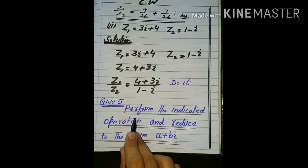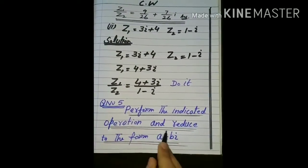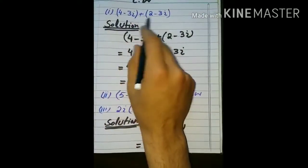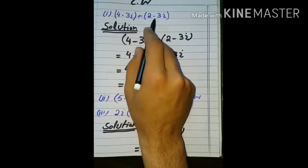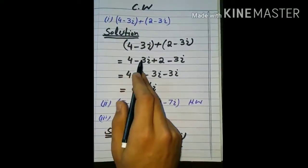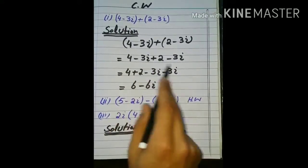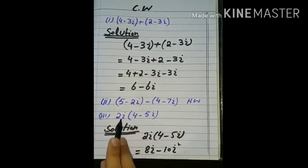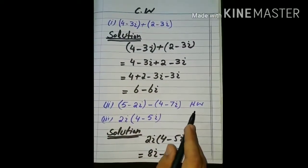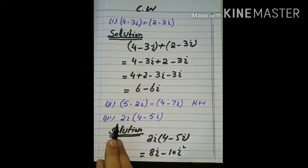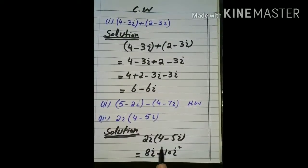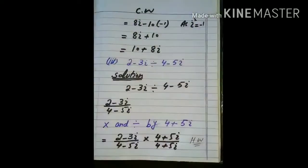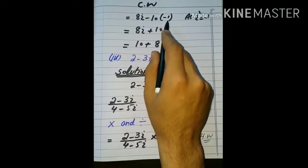Next ہمارے پاس last question: perform the indicated operation and reduce to the form of a plus b iota۔ یہ question دیا ہے — ان دونوں complex numbers کو add کرنا ہے۔ اسی طرح real part کو real کے ساتھ اور imaginary کو imaginary کے ساتھ add کرنا ہے۔ arrange کیا تو 6 iota اور minus 6 iota آجائے گا۔ آپ لوگوں نے next question خود کرنا ہے۔ تیسرا part: multiplication کرنا ہے — 2 iota کو multiply کرو تو 8 iota اور plus minus minus two five: 10 iota square آجائے گا اور 8 iota اپنی جگہ پر minus 10 iota square۔